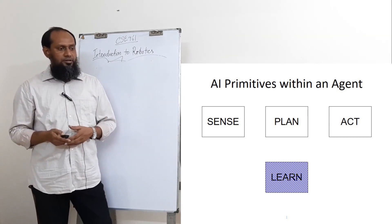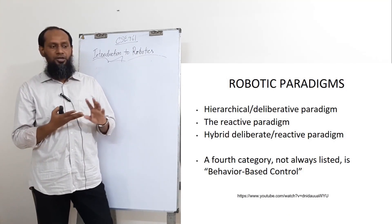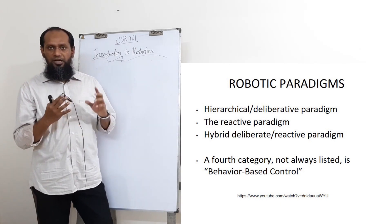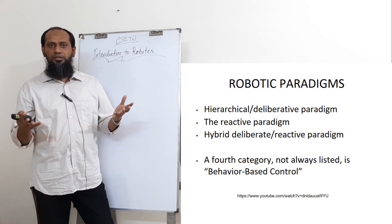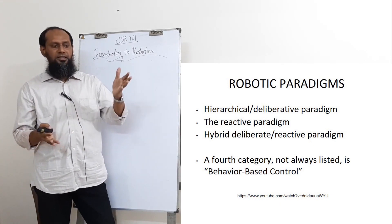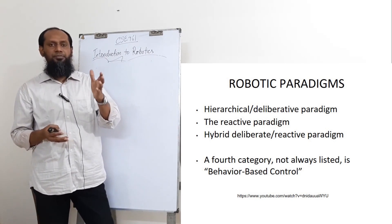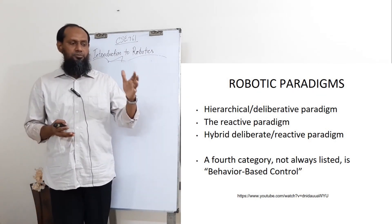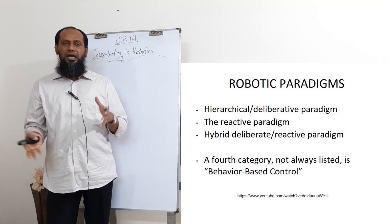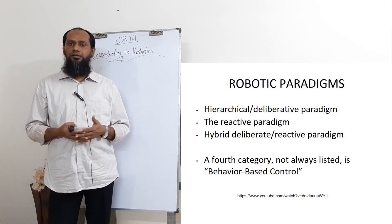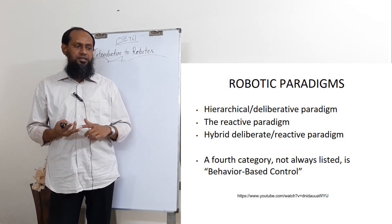So the three main primitives of AI are sense, plan, and act. There are also three main paradigms of robotics. One is the hierarchical paradigm, based on sense, then plan, then act. Another is the reactive paradigm — sense and act. And then there is the hybrid, which is a combination of both deliberative and reactive. There is also a behavioral-based control paradigm, which some books treat as separate and others call a subset of the hybrid system.